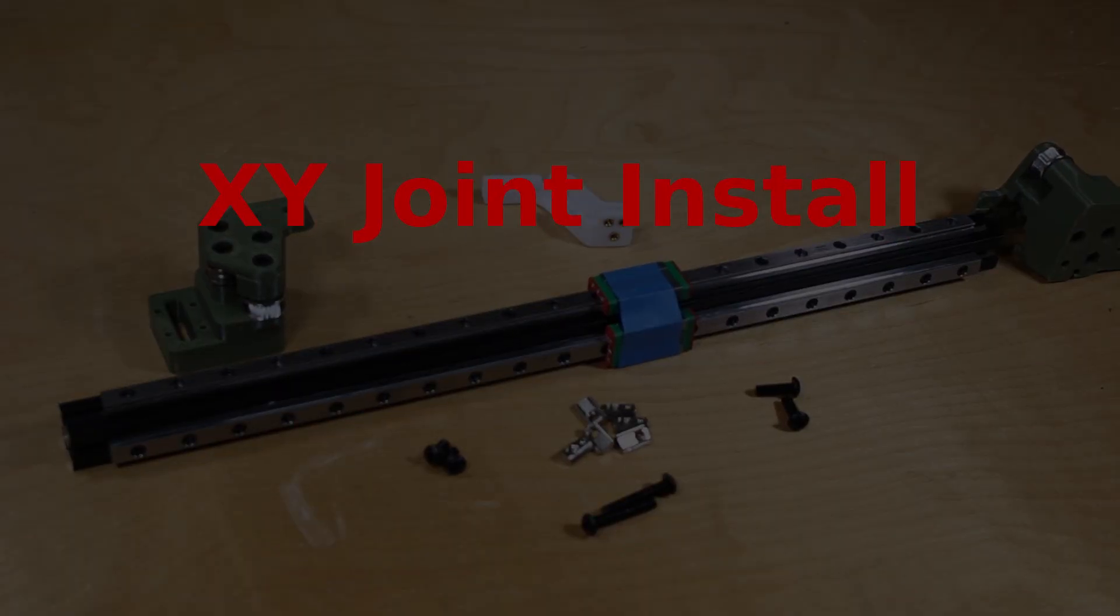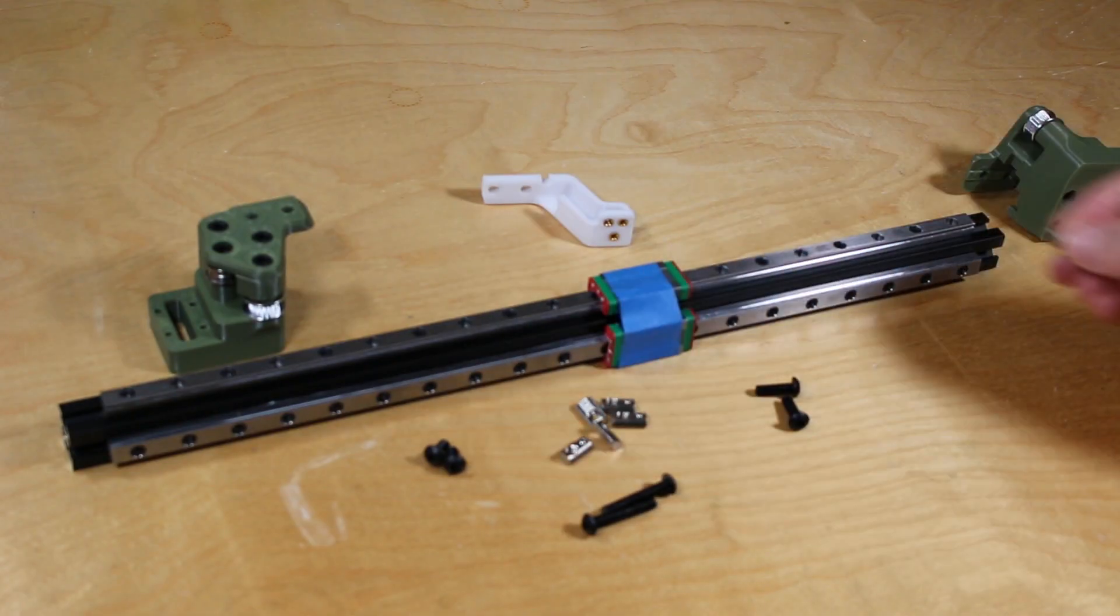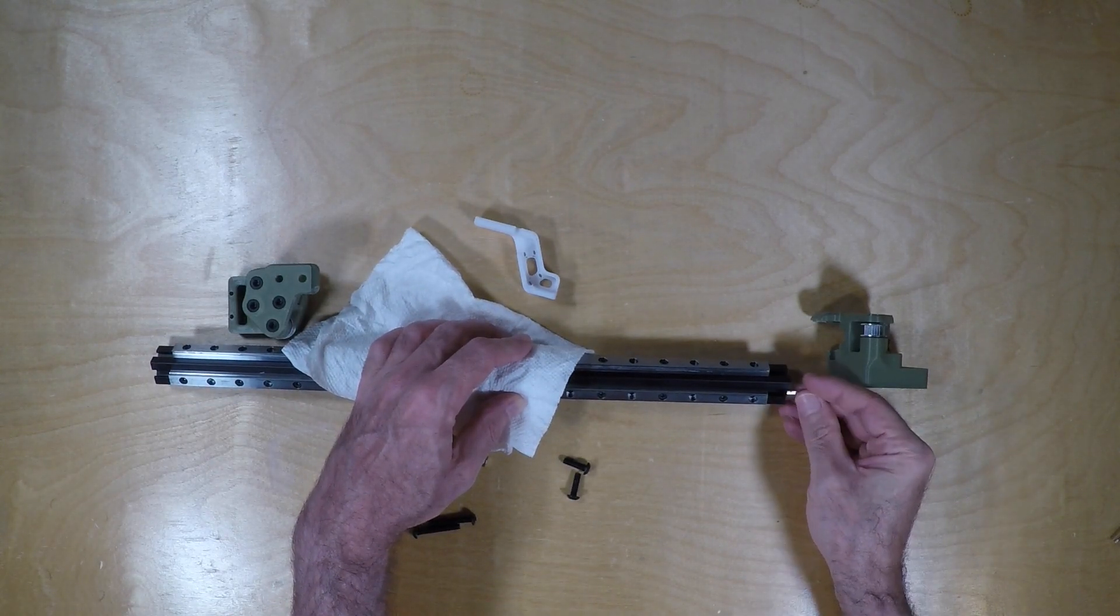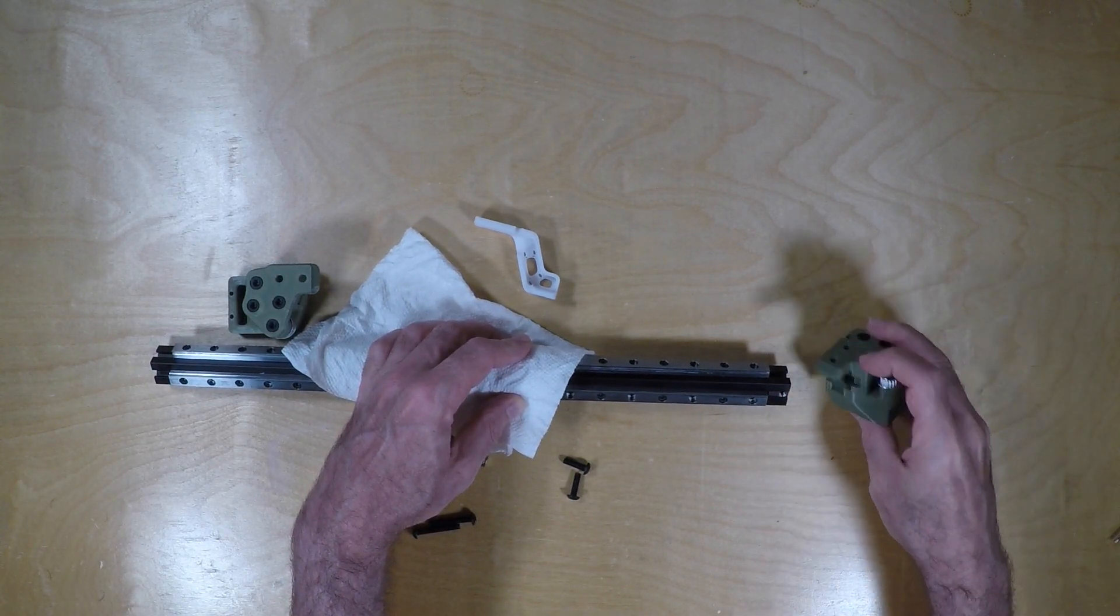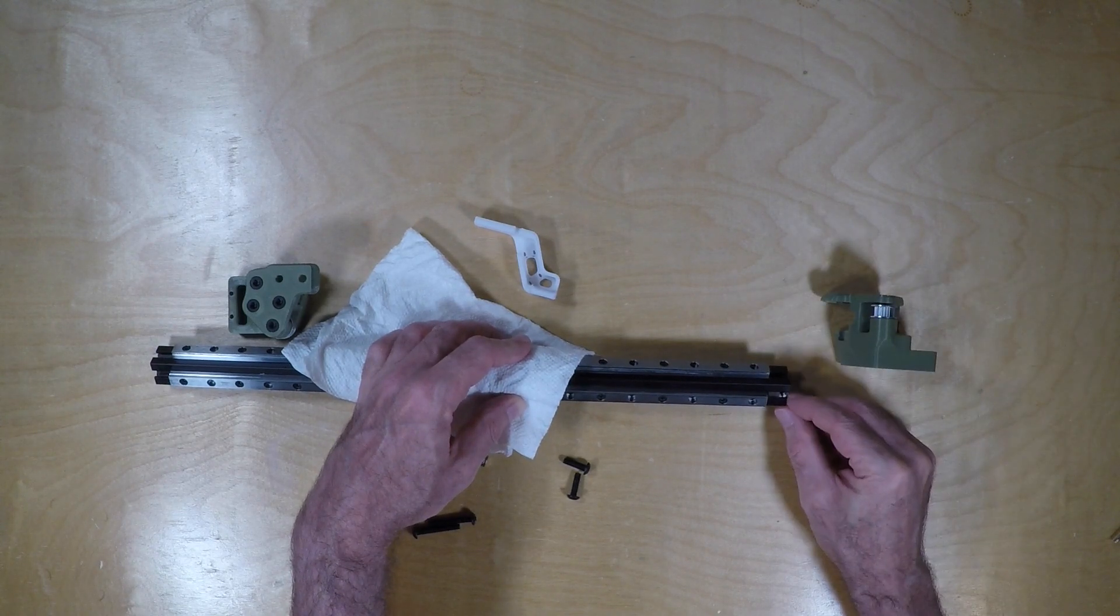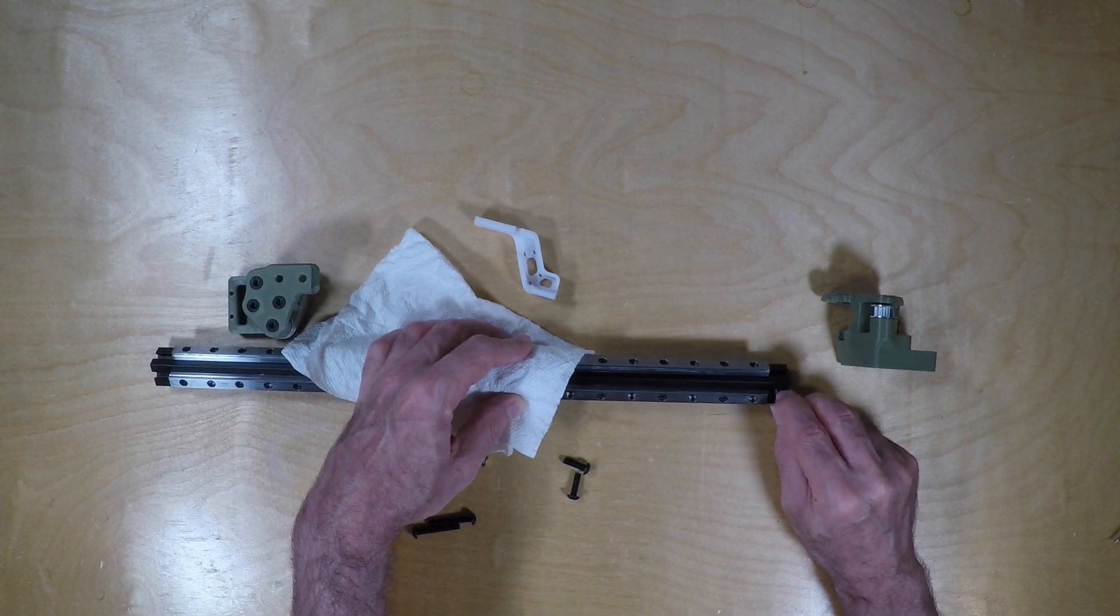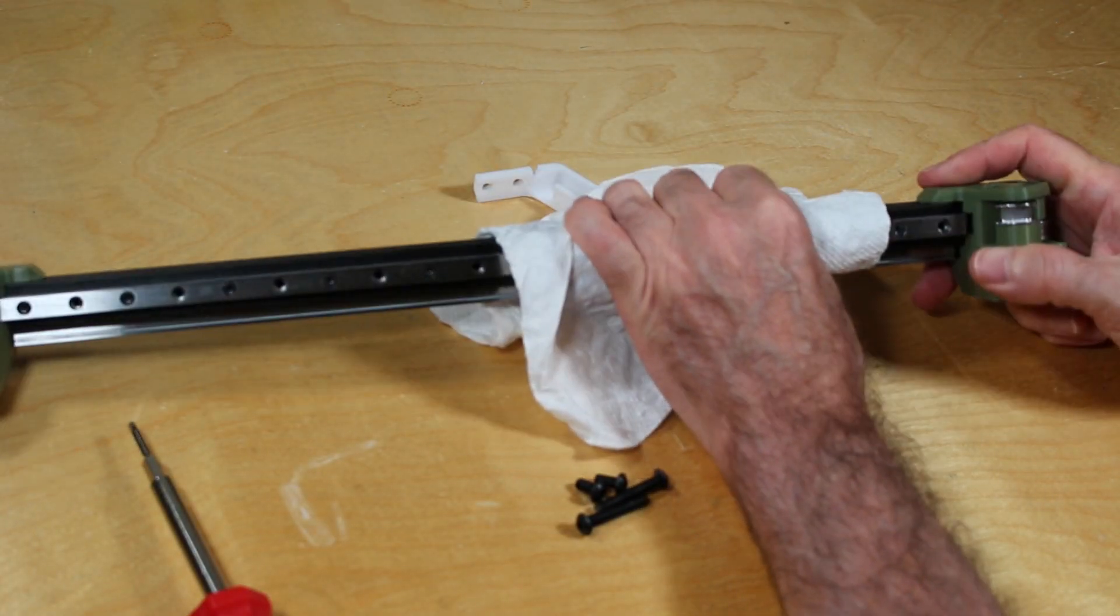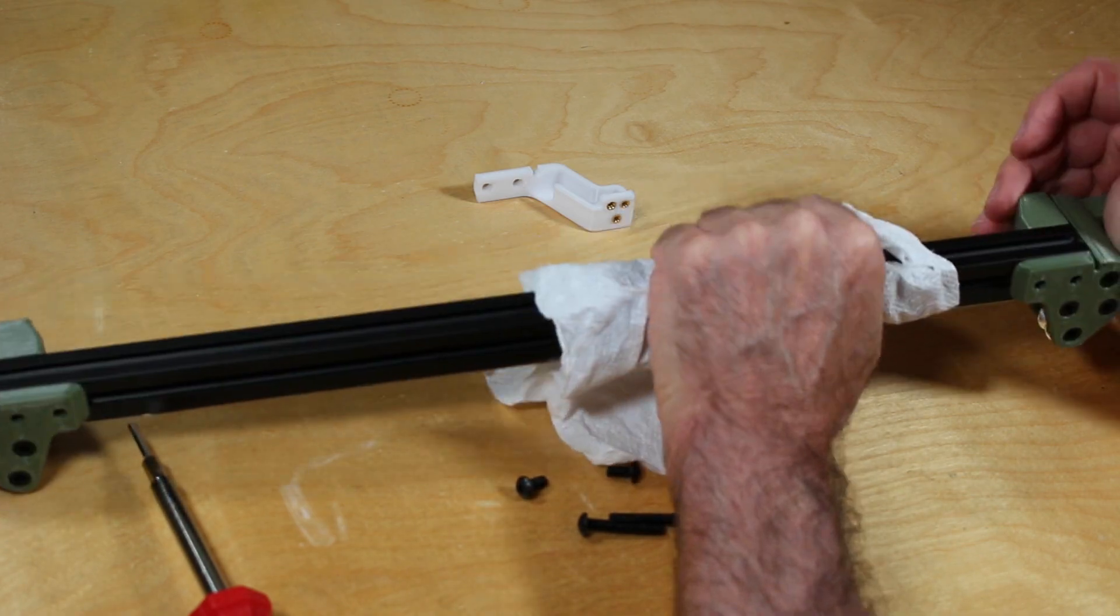And now we install the XY joints. It's a really warm day, my hands are a little bit sweaty, and so I'm using this paper towel to keep moisture off the rails. I don't really think it's necessary. There is a protective coat of oil on the rails and they're stainless steel, but I figure better be safe than sorry.